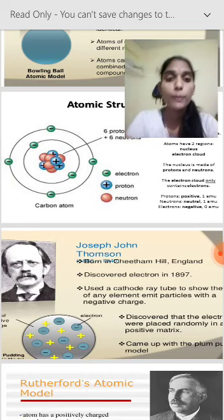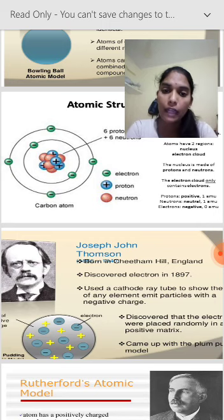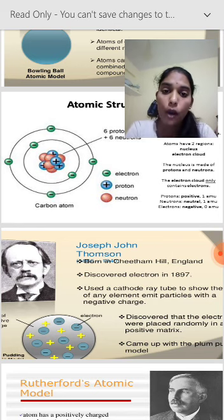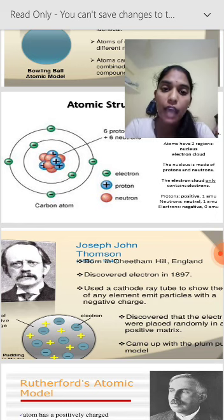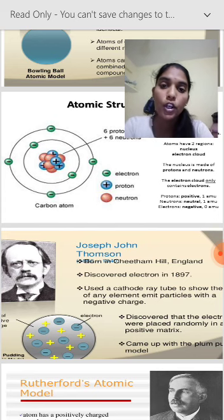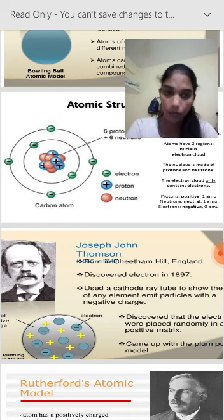The neutron is denoted by neither a positive nor a negative charge. In a carbon atom diagram we can see three types of spheres: green color, orange color, and blue color. The green color spheres are known as electrons, the blue color spheres are known as protons, and the orange color spheres are known as neutrons — which are neither positive nor negative.